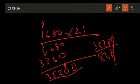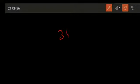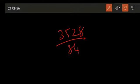Cancel the zeros to simplify. Now you have to do 3528 by 84. We can divide both by 2 to get 1764 by 42, and again by 2 to get 882 by 21.